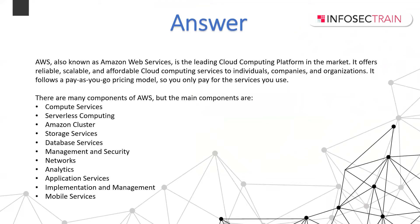The first main component is computational service. It is a generic term used to reference processing power, memory, networking, storage, and other resources required for the computational success of any program. For example, applications that run machine learning algorithms require many gigabytes of RAM and multiple CPUs. In this case, CPU, RAM, and GPU will be called compute resources, and the application would be a compute-intensive application. For compute services we have EC2, Lightsail, ECS, and Elastic Beanstalk.